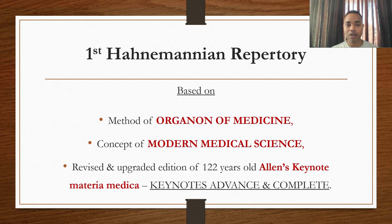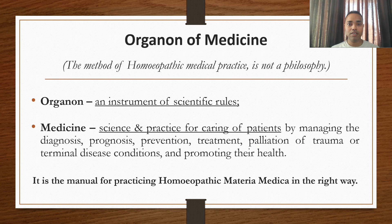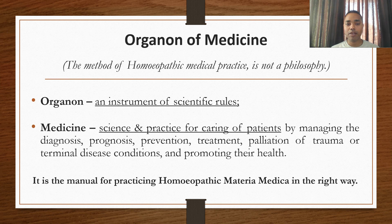Now, I will show you how this is the first Hahnemannian Repertory with reference to the Organon of Medicine. First of all, what is the Organon of Medicine? Organon means an instrument of scientific rules, and medicine means the science and practice for the caring of patients by managing diagnosis, prognosis, prevention, treatment, palliation of trauma or terminal disease conditions, and promoting their health.